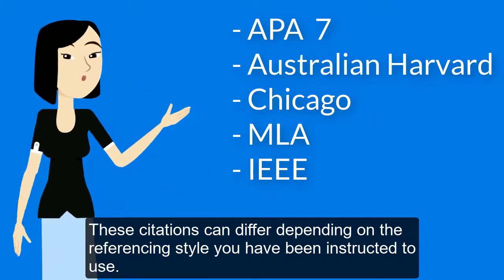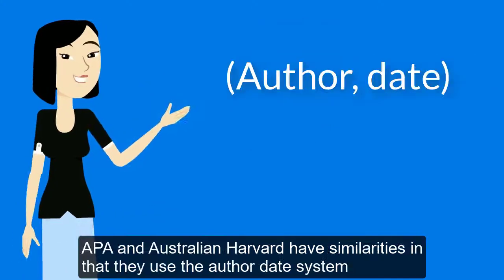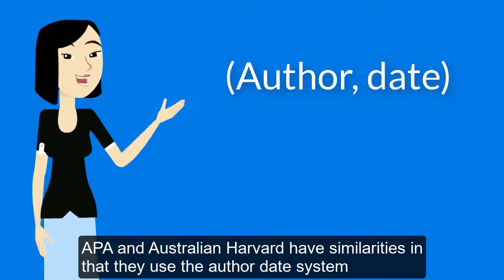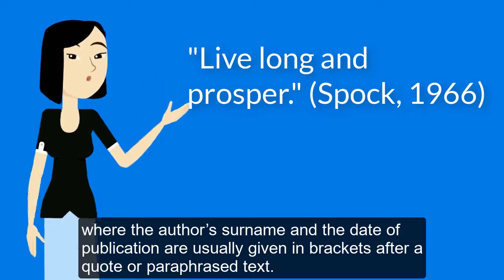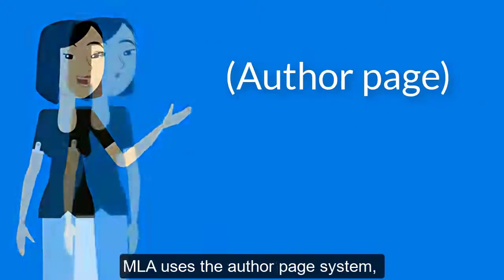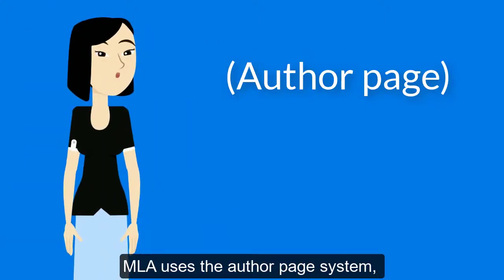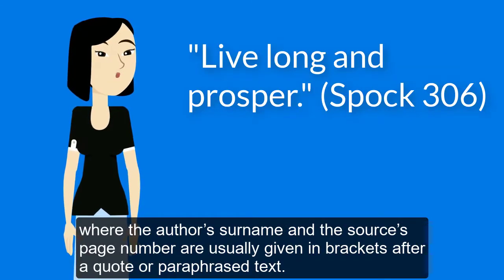These citations can differ depending on the referencing style you have been instructed to use. APA and Australian Harvard have similarities in that they use the author-date system, where the author's surname and the date of publication are usually given in brackets after a quote or paraphrased text. MLA uses the author-page system, where the author's surname and the source's page number are usually given in brackets.